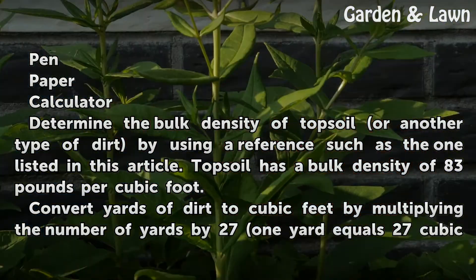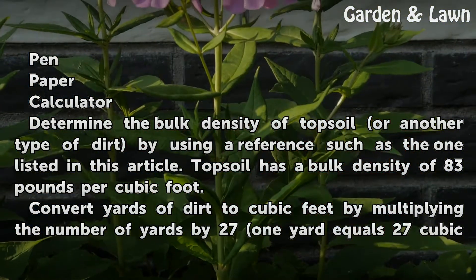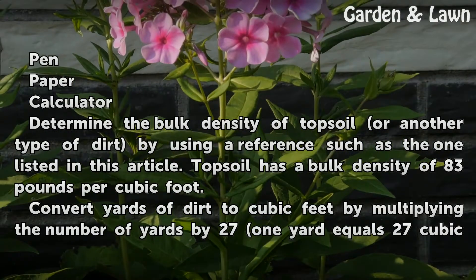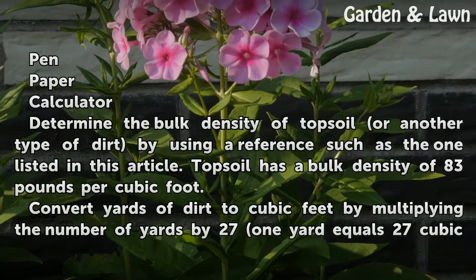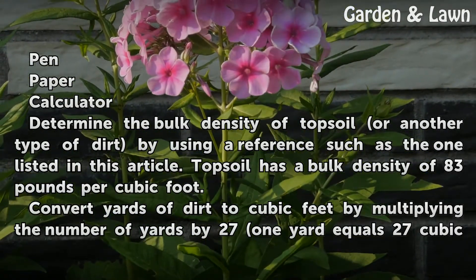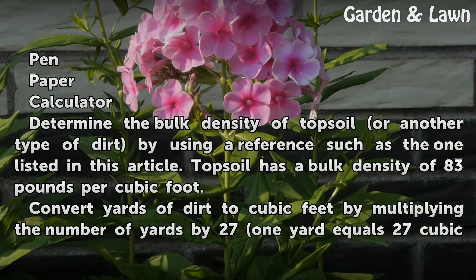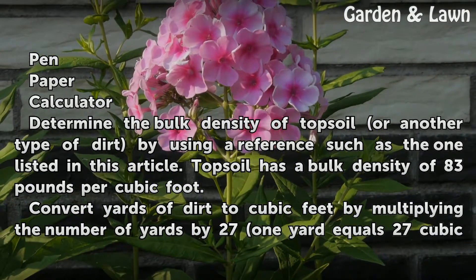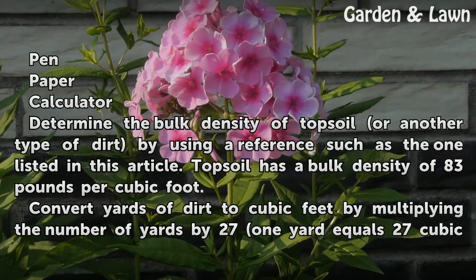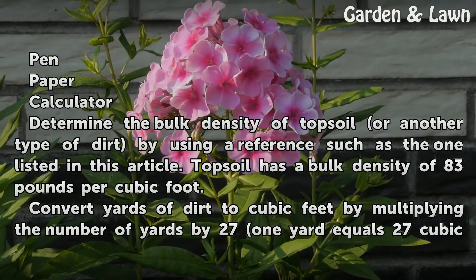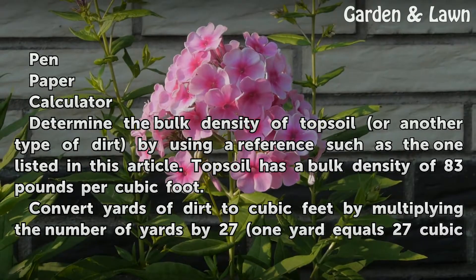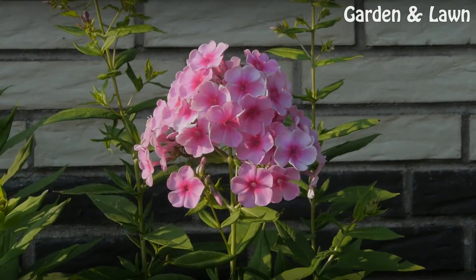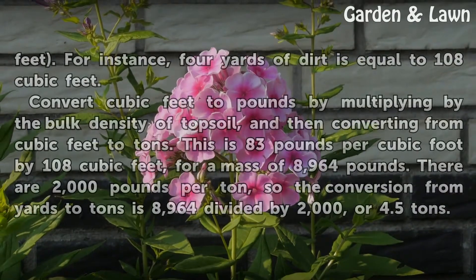Determine the bulk density of topsoil or another type of dirt by using a reference such as the one listed in this article. Topsoil has a bulk density of 83 pounds per cubic foot. Convert yards of dirt to cubic feet by multiplying the number of yards by 27 — 1 yard equals 27 cubic feet.